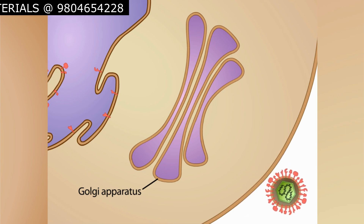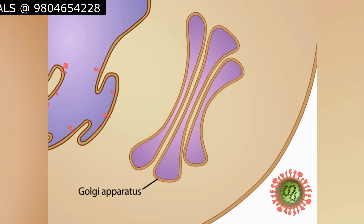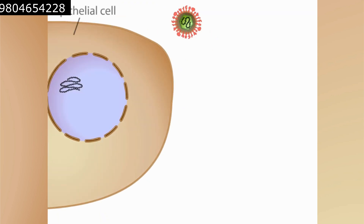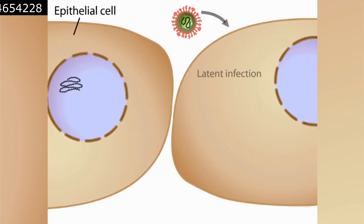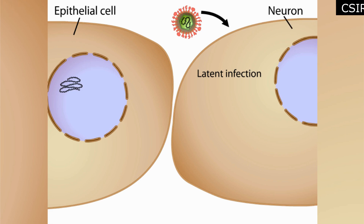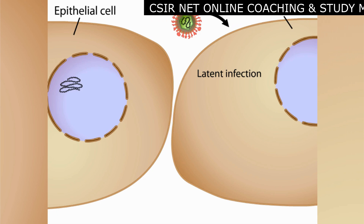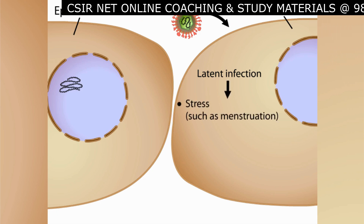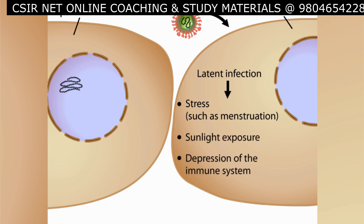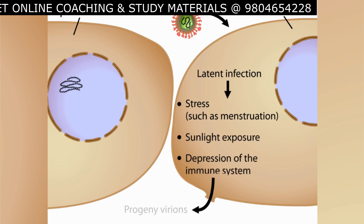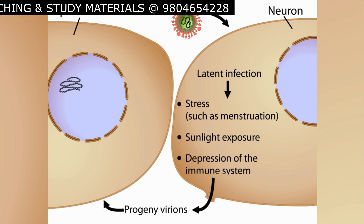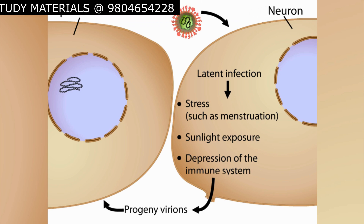The virion buds off from the endoplasmic reticulum and fuses with the Golgi apparatus, then gently buds off from the Golgi and fuses with the plasma membrane. The completed virion is now outside the cell. The primary infection occurs in epithelial cells, followed by latent infection within the neurons of ganglia near the original site of infection. The latent infection of the ganglia can later lead to new outbreaks of virus, often triggered by stress, sunlight exposure, or depression of the immune system, with progeny virions traveling back to the epithelial cells and causing lytic infections.